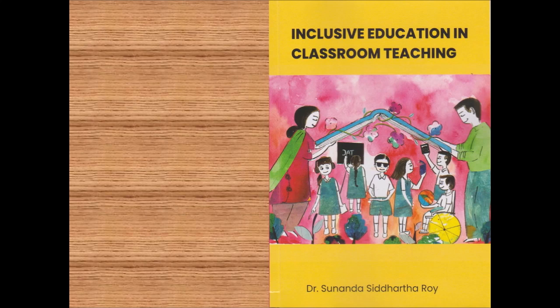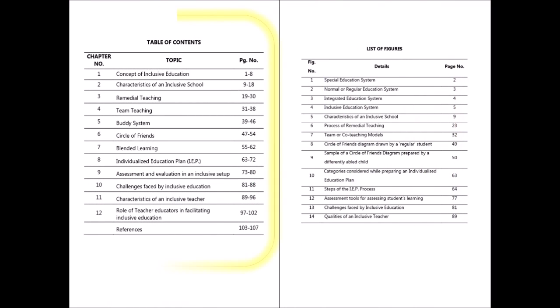This book consists of 12 chapters related with inclusive education. Figures have been added in these chapters to make the concepts easy to understand.